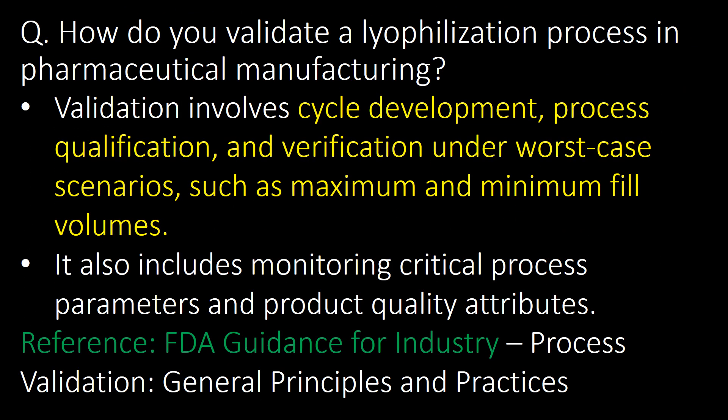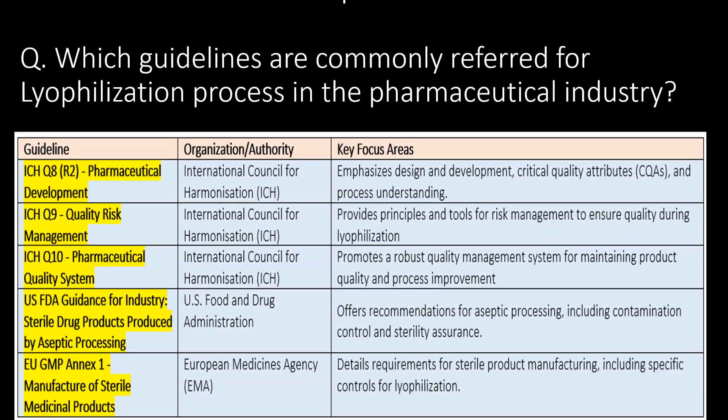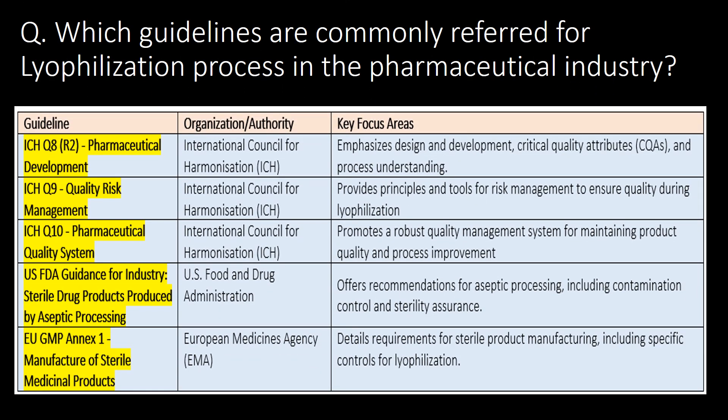How do you validate a lyophilization process in pharmaceutical manufacturing? Validation involves cycle development, process qualification, and verification under worst-case scenarios such as maximum and minimum fill volumes. It also includes monitoring critical process parameters and product quality attributes. Reference: FDA guidance for industry.